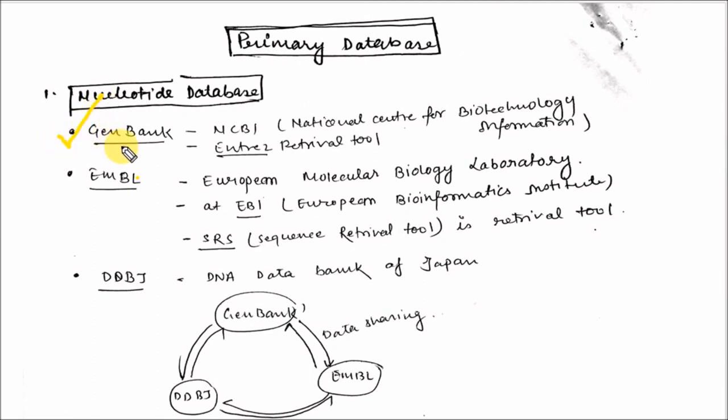Primary nucleotide databases include GenBank, located at NCBI (National Center for Biotechnology Information), which uses ENTREZ as a retrieval tool. The second is EMBL (European Molecular Biology Laboratory), located at EBI (European Bioinformatics Institute), which uses SRS (Sequence Retrieval System) as a retrieval tool. The third is DDBJ, DNA Data Bank of Japan.